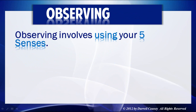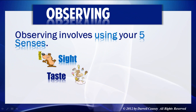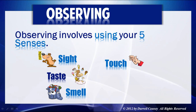First, observing. Observing involves using your five senses. You need to use your sight, taste — be careful about tasting anything in your laboratory — smell, touch, and of course hearing. Using these five senses together to observe and watch the phenomena around you will begin to have you think about ideas and hypothesize.